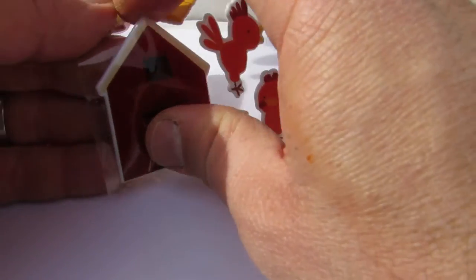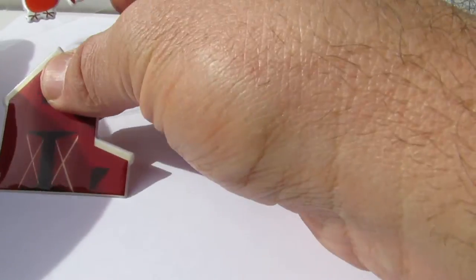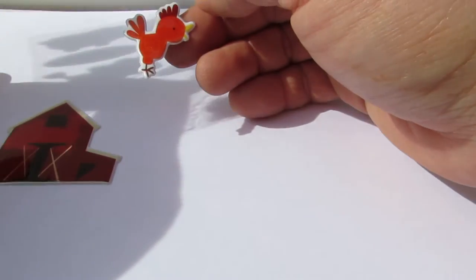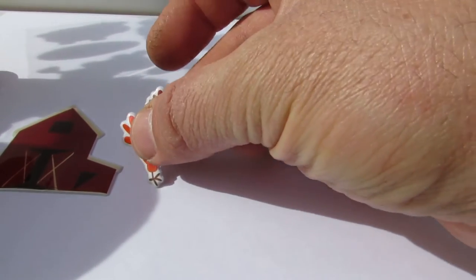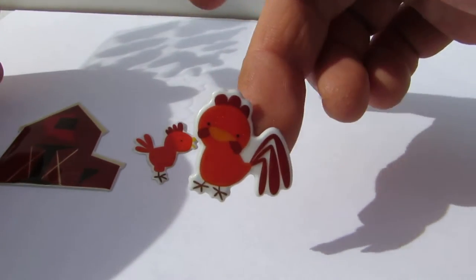stick them to this white sheet. And that's the barn, right? And we have a chicken, maybe we have a rooster. Looks like a rooster.